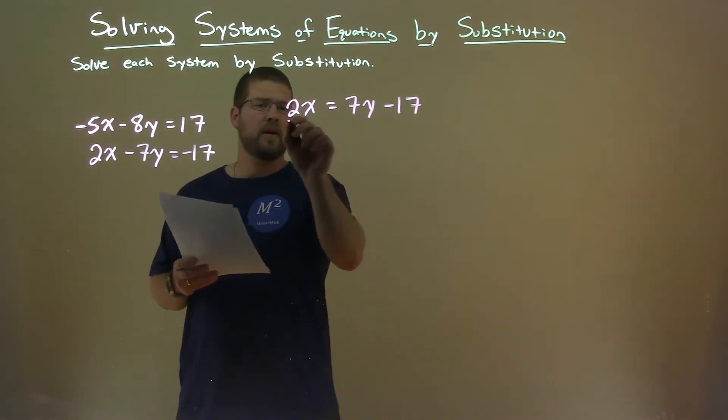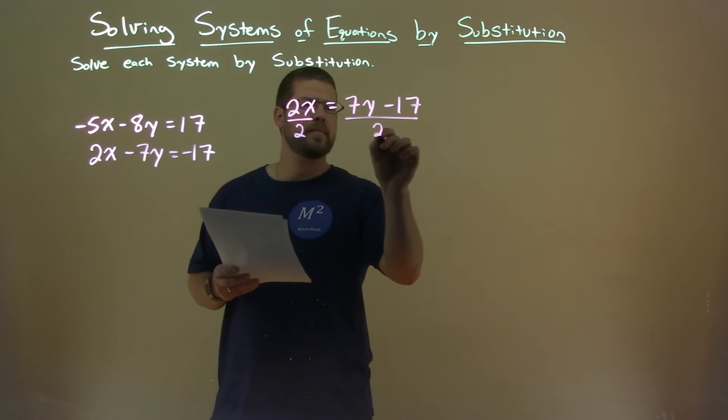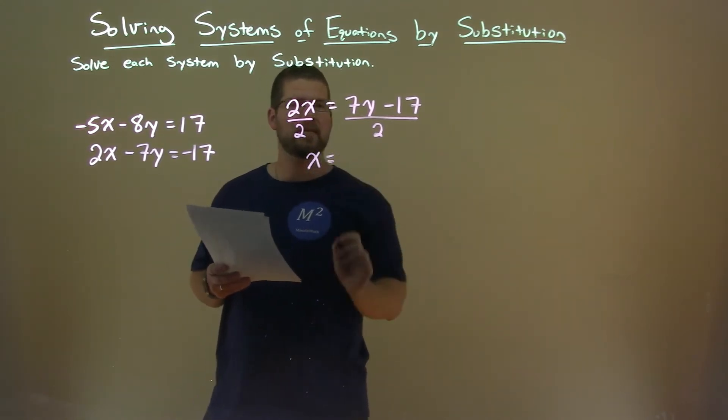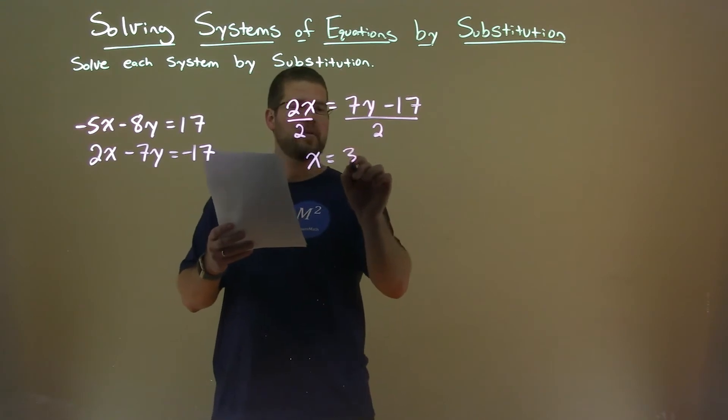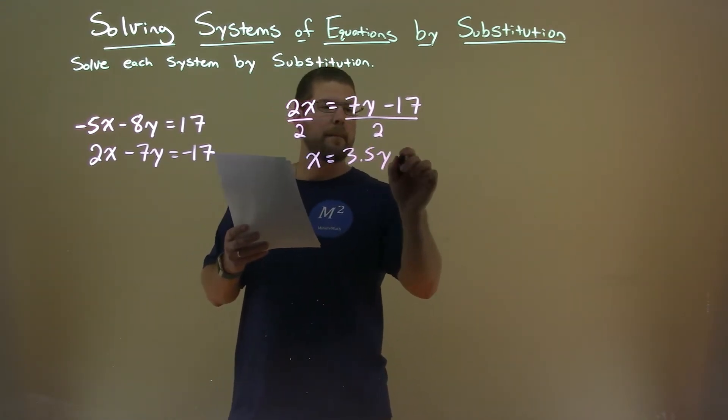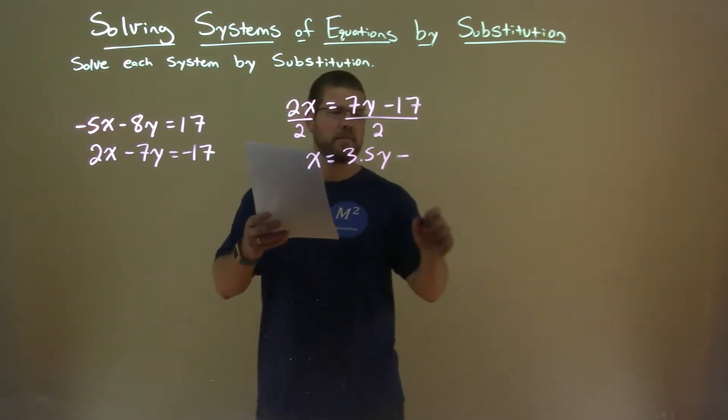Well then from there, to get x by itself, divide both sides by 2. x is now by itself, but 7 divided by 2 is 3.5, so we have 3.5y here, minus 17 divided by 2 is 8.5.